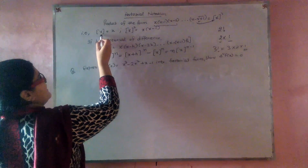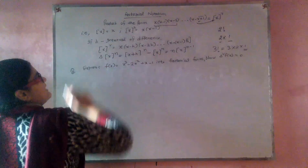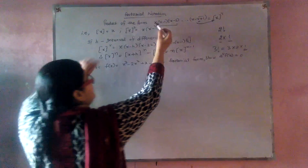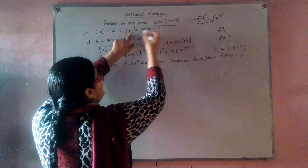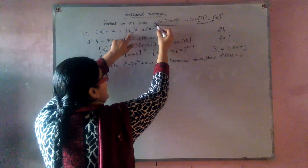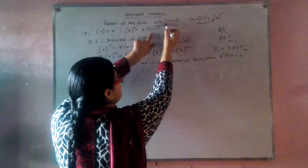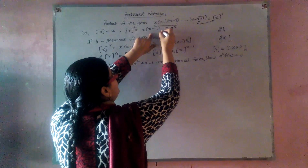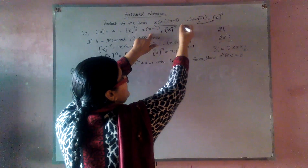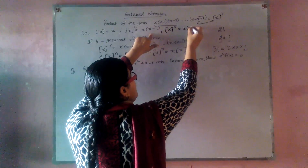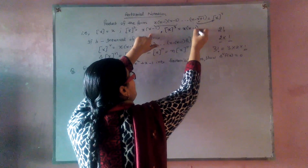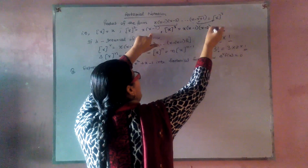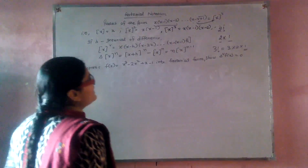If we are talking about factorial notation of x raised to power n: x squared leads to x(x minus 1). Same here, x cubed — factorial notation of x cubed becomes x(x minus 1)(x minus 2) and so on.